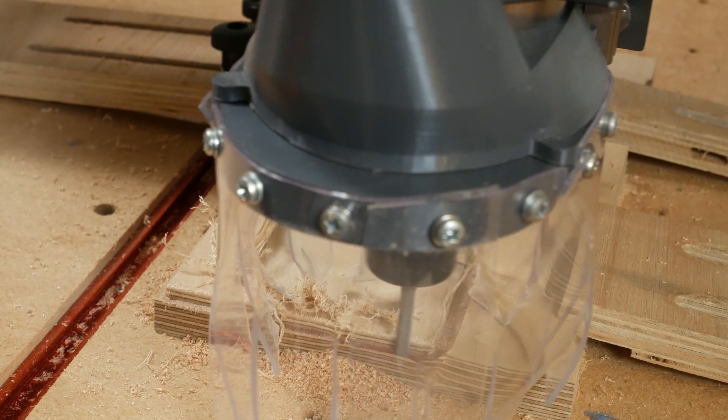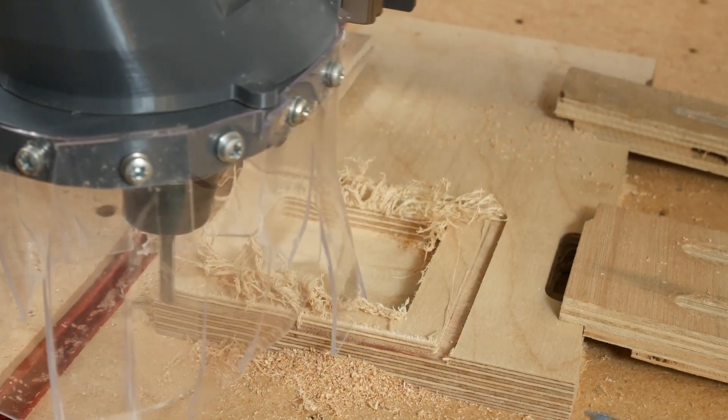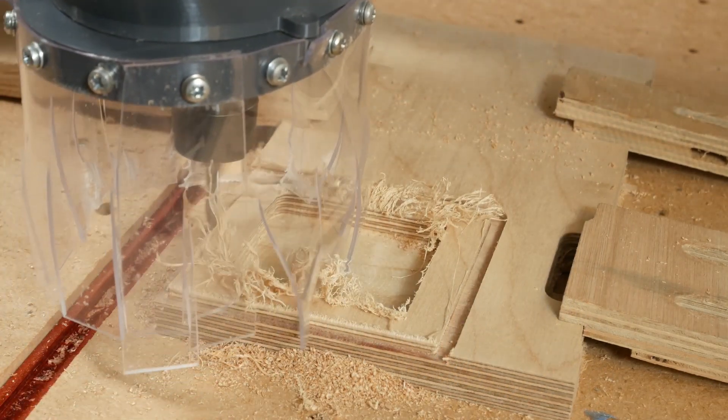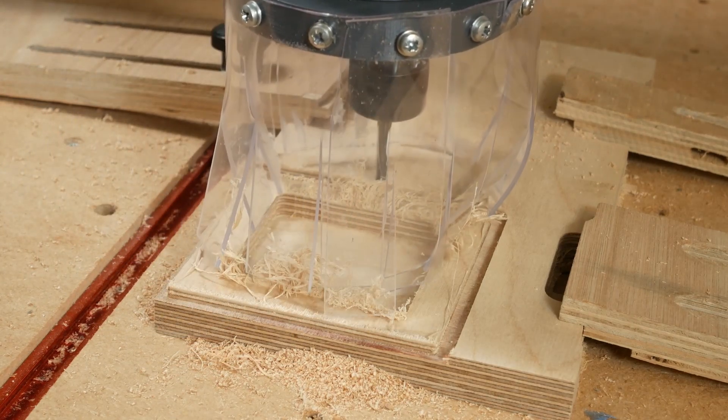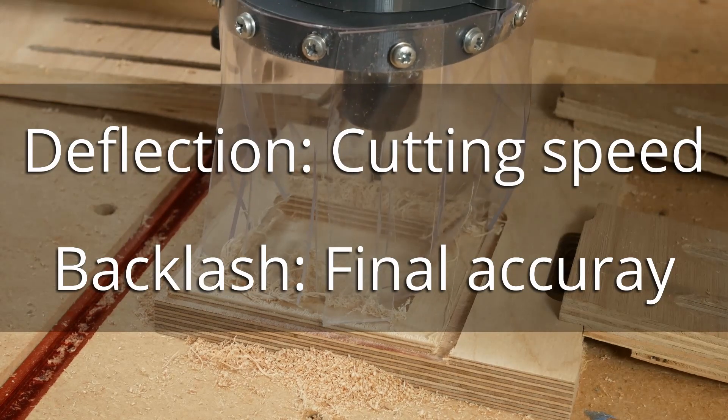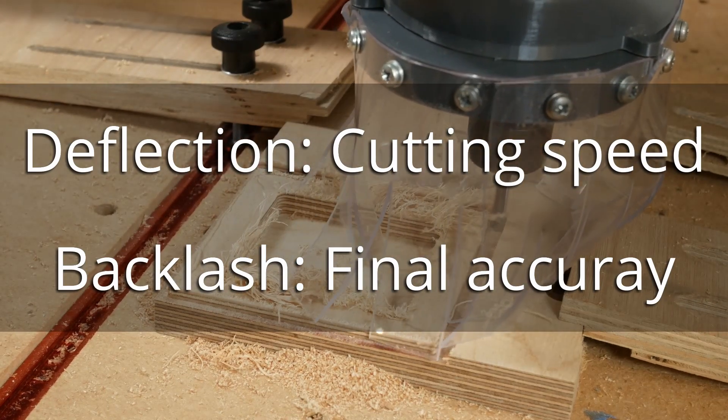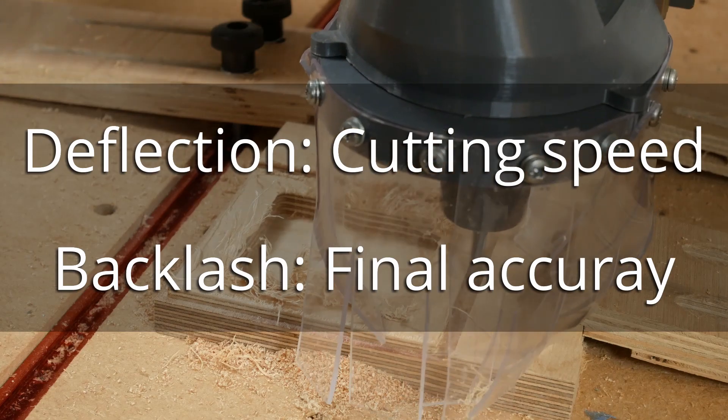In practice, the impact of vibrations and resonances can vary from poor finish through breaking cutters, damaging the workpiece, pulling the workpiece loose or even damaged parts of the machine. So deflection primarily limits the speed at which we can cut and potentially the quality of finish, whilst backlash primarily limits our final accuracy.